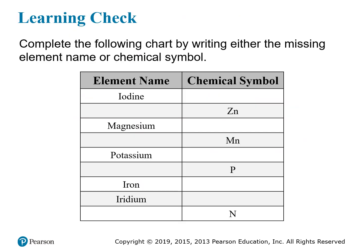Let's complete this chart by filling in some elements from our periodic table. You can consult one by Googling 'periodic table' — the first result is a very useful one. Iodine, for instance, is I. The chemical symbol Zn is the symbol for zinc, a metal. Magnesium has the symbol Mg. Mn, on the other hand, is an element called manganese. Magnesium and manganese are somewhat easy to confuse, especially because their symbols differ by just one letter, so don't confuse Mg and Mn.